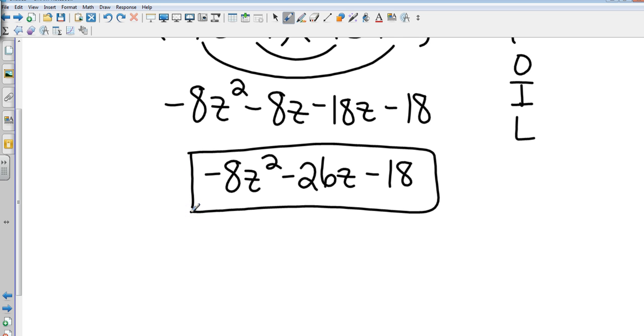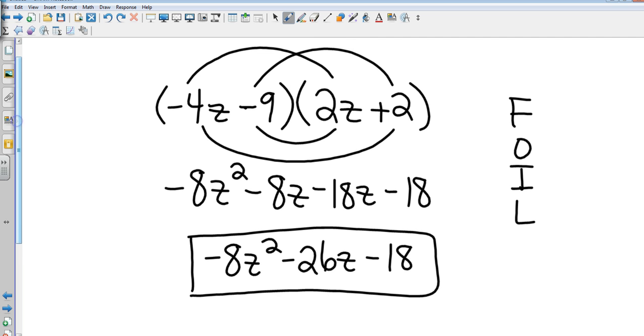Okay, FOIL method, smiley man: first, outside, inside, last. Now, last example.